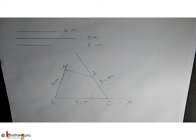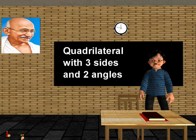So now you learned how to draw a quadrilateral given 3 sides and 2 included angles. That's all in this lesson children.